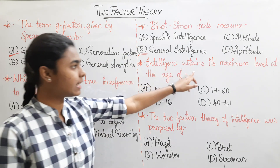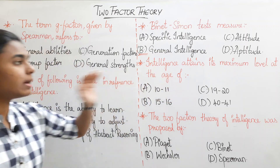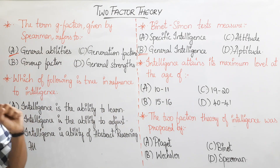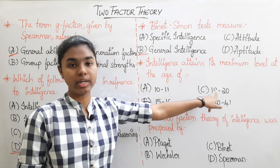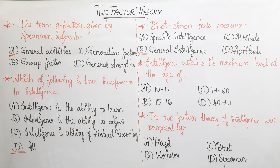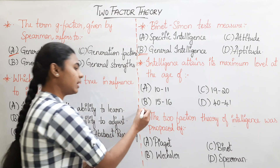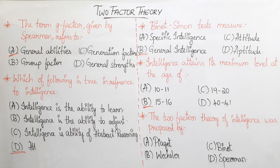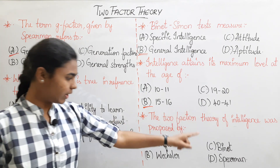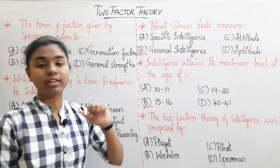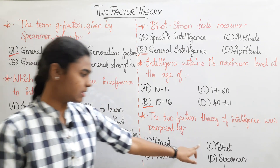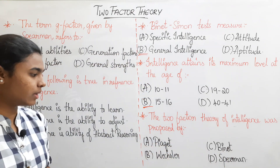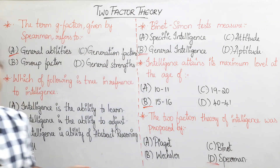Question 4: Intelligence attains its maximum level at the age of — the correct answer is Option B: 15 to 16 years. Question 5: The two-factor theory of intelligence was proposed by — Option A: Piaget, Option B: Wechsler, Option C: Binet, Option D: Spearman. The correct answer is Option D: Spearman.